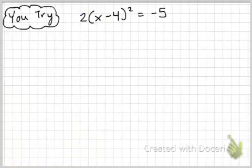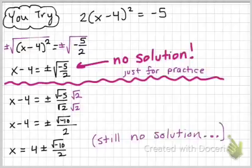I want you guys to try this last problem. See if you can replicate the same steps that we talked about earlier. Okay, thank you for giving that a try. So hopefully you realize that once you have isolated x minus 4 squared and you take the plus or minus square root, your answer is no solution because you can't take the square root of a negative. However, just to show you what it would look like to finish simplifying this, you can rationalize your denominator and finish solving for x. But it is still no solution.